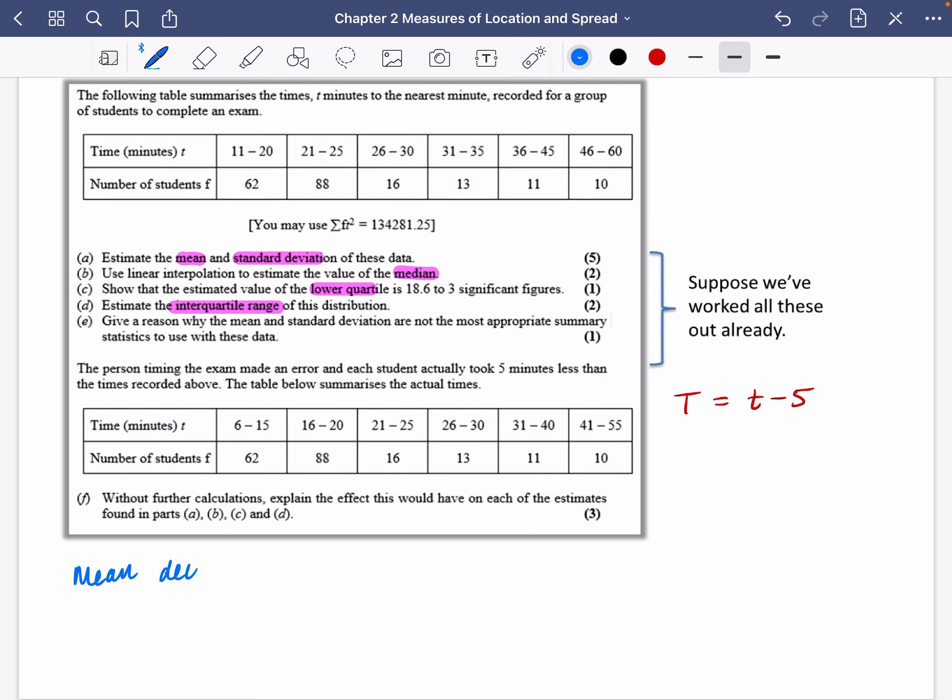So what would happen to the mean? Well, the mean would decrease by five. The standard deviation, would it change? Nope. Standard deviation is the same. The median is also going to decrease by five. The lower quartile is going to decrease by five. These are all measures of location. But the interquartile range is a measure of spread. So the interquartile range is going to remain the same. Okay, nice, easy question there.